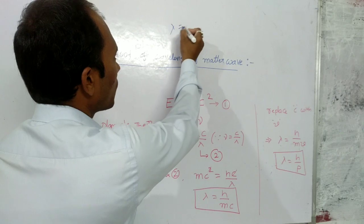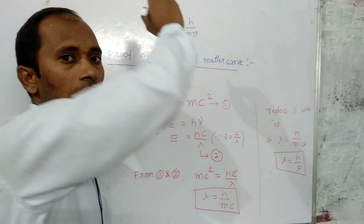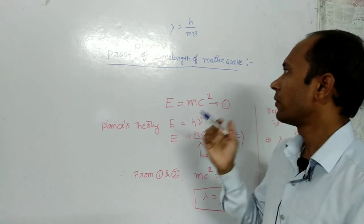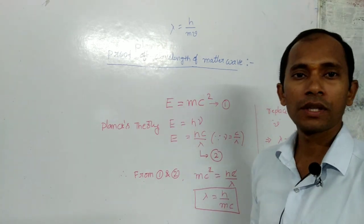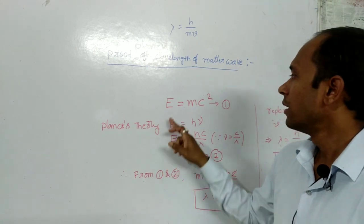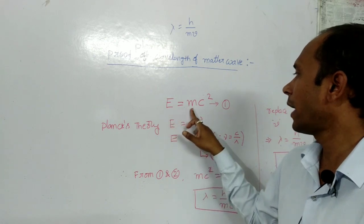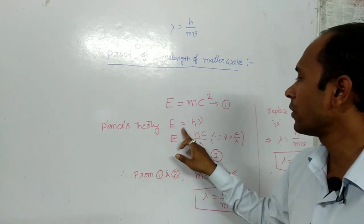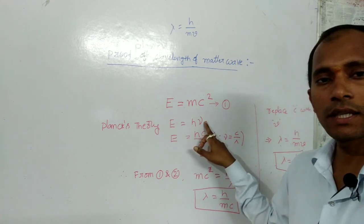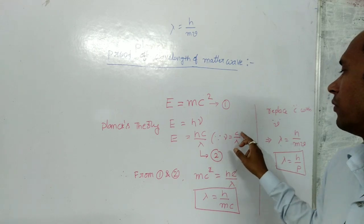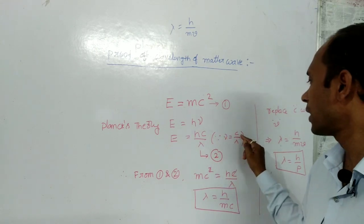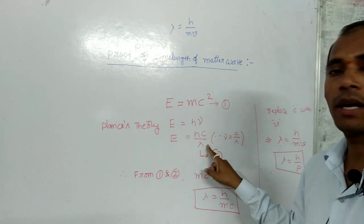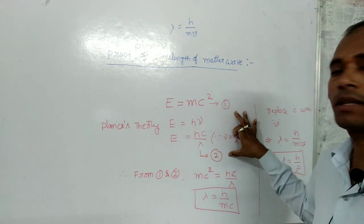According to De Broglie, lambda is equal to H by mV. Now, can there be any proof for the matter wave? If we see the proof of this wavelength — the De Broglie hypothesis — we know from Einstein's relation E is equal to mc², and according to Planck's quantum theory, E is equal to H into nu, where nu is the frequency. The frequency nu equals C by lambda, so E equals Hc by lambda. These two equations both represent energy.